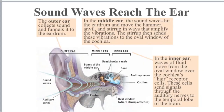Here is the basic makeup of the ear: the outer ear, the middle ear, and the inner ear. The outer ear collects sound and funnels it to the eardrum — it's what you can see on the side of someone's head. The middle ear is the next stage in; when you clean your ear with a Q-tip and feel that odd sensation, that's your middle ear. Sound waves hit the eardrum and move the hammer, anvil, and stirrup in ways that amplify the vibration. The stirrup then sends vibrations to the oval window of the cochlea, which is in the inner ear.